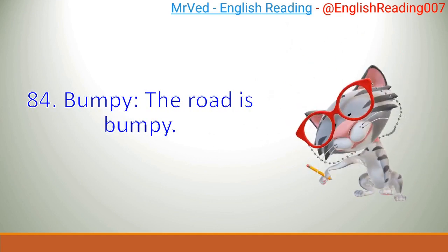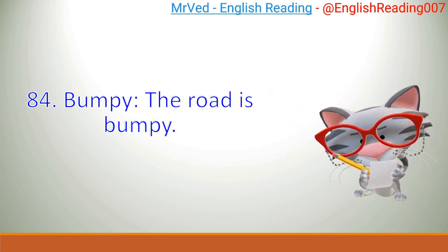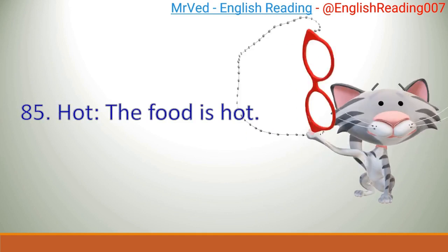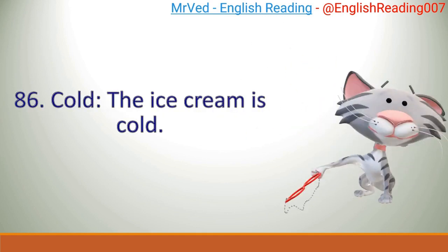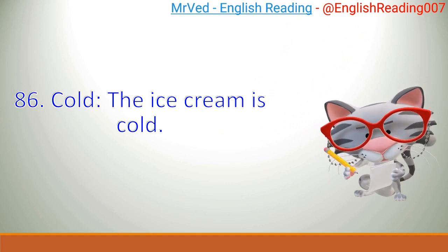84. Bumpy. The road is bumpy. 85. Hot. The food is hot. 86. Cold. The ice cream is cold.